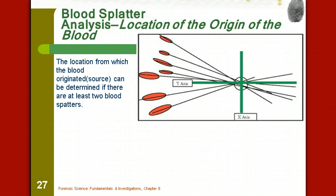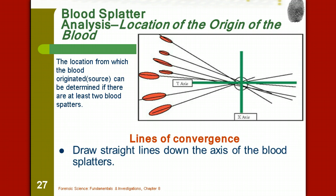We can determine the location of the origin of the blood. When we look at the blood droplets, those tails are indicating which direction it was traveling. But if there are at least two spatters or spots or drops, we can indicate what was the location of the victim when they were hit. We call these the lines of convergence. Basically, you draw straight lines down the axis of the blood splatters to indicate where those lines converge. Wherever that would be on an x and y axis, that's what indicates the point of origin of the blood.